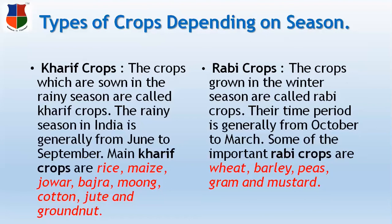There is one more type of crop. It is the Zaid crops, which are grown in the summer months. Examples are watermelon, muskmelon, and so on.